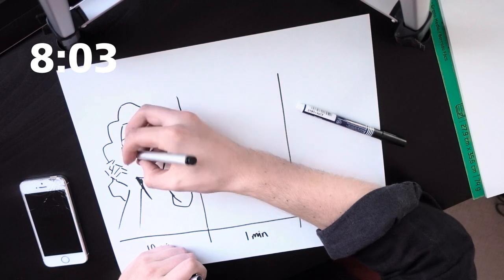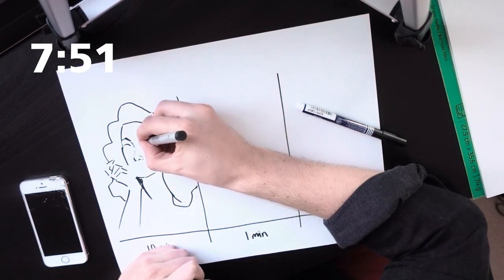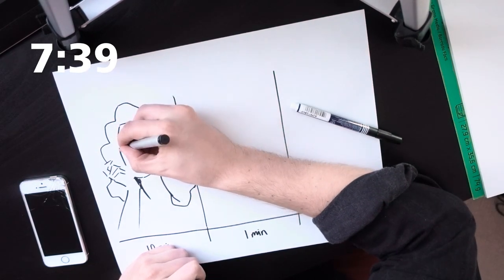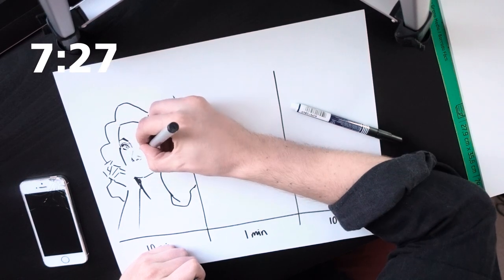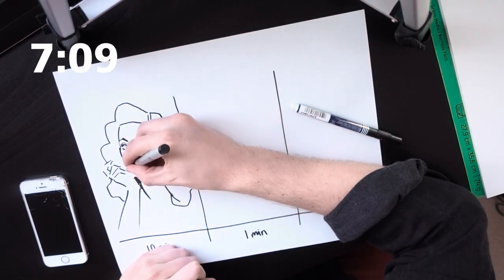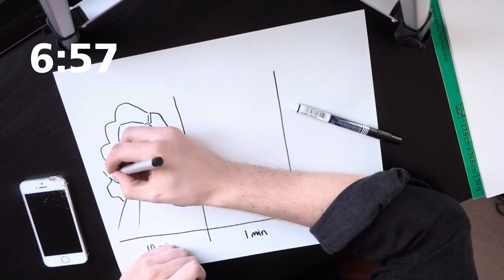I decided to draw Dita Von Teese for this challenge. I don't know why. I was wandering around my house and I saw her book Your Beauty Mark. I really love the cover of that book, so I took it and I chose it to be my reference image.